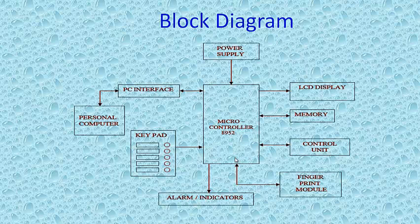The block diagram for the electronic voting machine includes: a microcontroller with PC interface, a keypad interface, indicators such as an alarm, a power supply unit, an LCD display to show information, memory to store the votes, a control unit, and a fingerprint module. These are all the hardware requirements needed for the electronic voting machine.